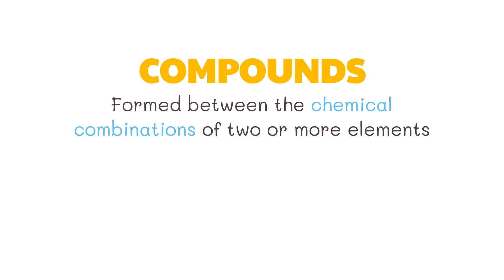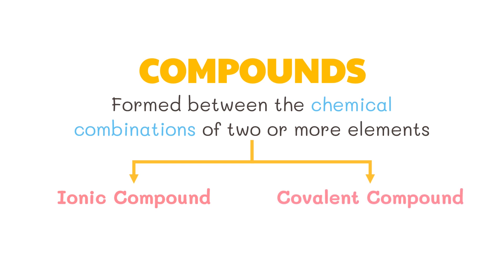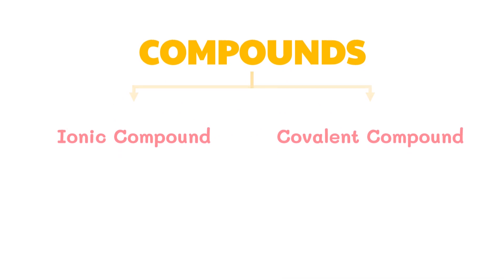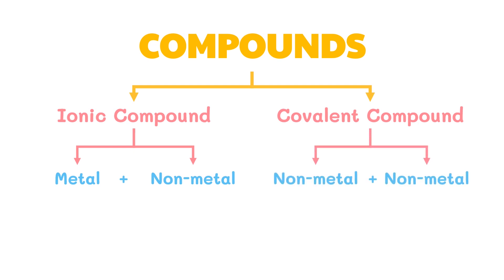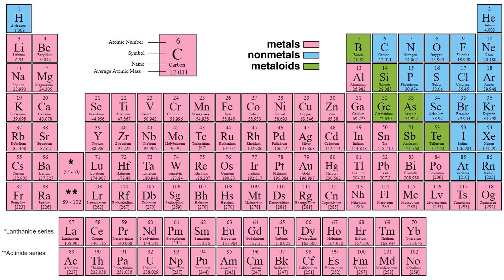Compounds are formed between the chemical combinations of two or more elements. There are two common types of compounds based on their chemical bonding characteristics: ionic compounds and covalent compounds. To distinguish between the types of compounds, we should first take note of the type of elements that are chemically combined. An ionic compound is formed from the combination of a metal and non-metal element. A covalent compound is formed from the combination of two non-metal elements or a metalloid and a non-metal element.